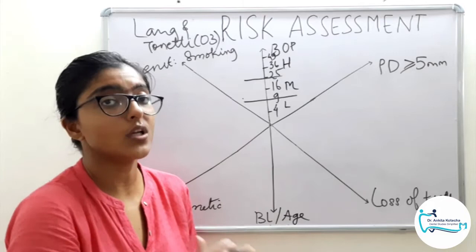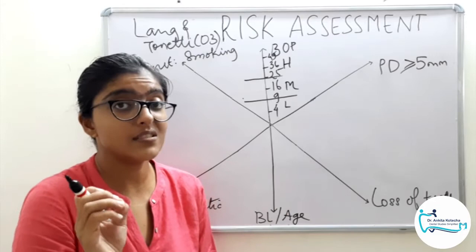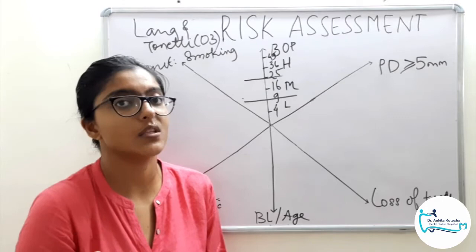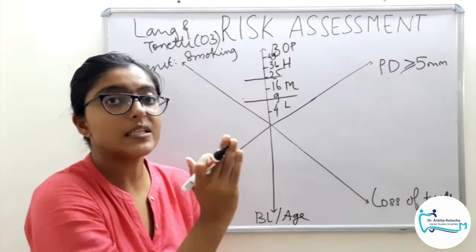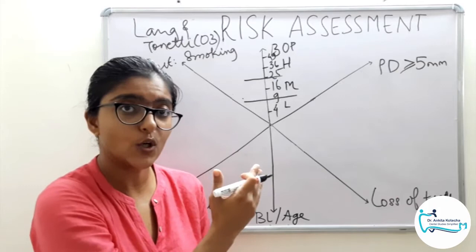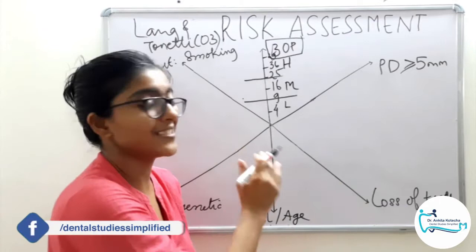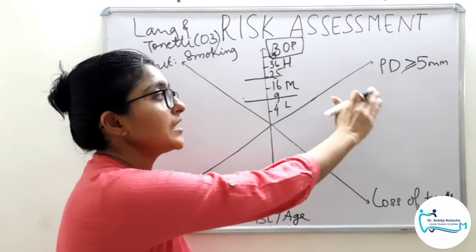To summarize why bleeding on probing is chosen as the first indicator: it represents patient's oral hygiene maintenance status, patient's host response, and levels of microorganisms residing within the oral cavity. When coupled with residual probing depths, it is a good predictor of future loss of attachment, and conversely, absence of bleeding on probing is an excellent predictor of periodontal stability.